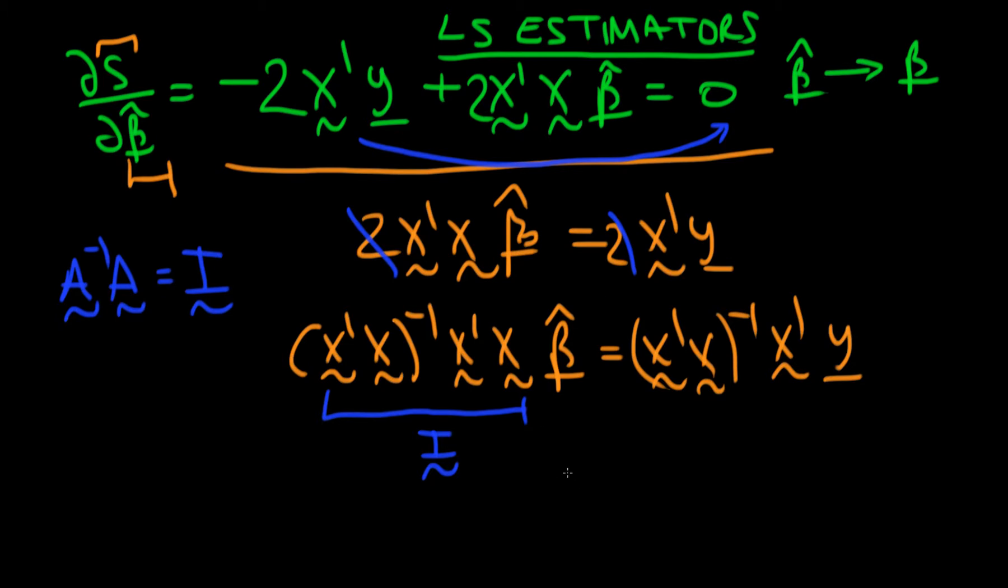So in fact we've got a form for our least squared estimators in matrix form. It's just equal to x prime x to the power minus 1 times x prime y.